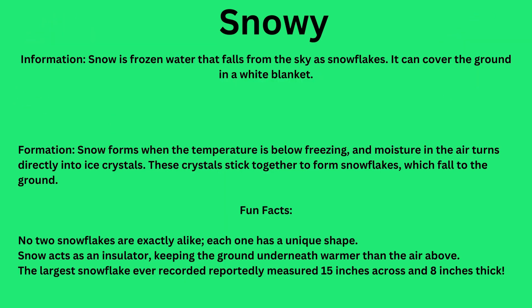Snowy. Snow is frozen water that falls from the sky as snowflakes. It can cover the ground in a white blanket. Snow forms when the temperature is below freezing and moisture in the air turns directly into ice crystals. These crystals stick together to form snowflakes, which fall to the ground.